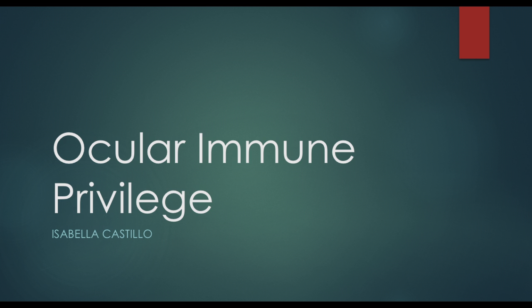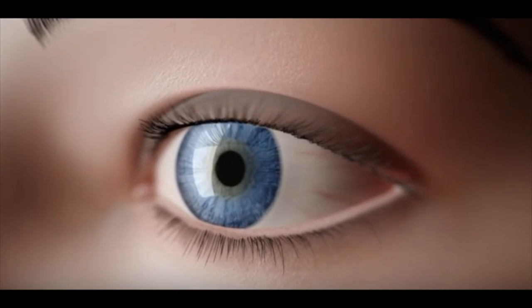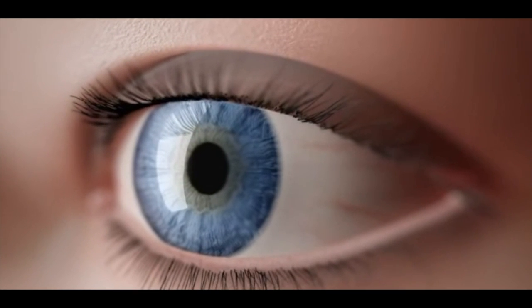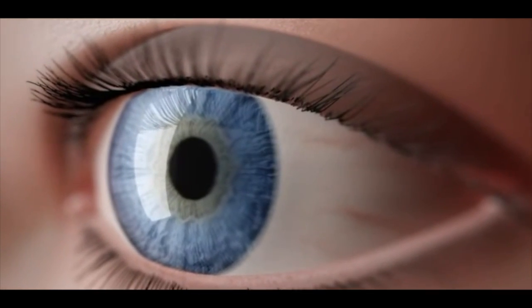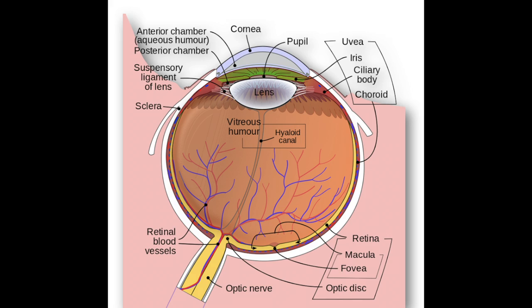What is ocular immune privilege? It's the attempt that our eye makes to limit local immune and inflammatory responses in order to preserve our vision. It's a homeostatic mechanism that preserves the normal function of our eyes, since they have such highly specialized tissue and a limited capacity for renewal in case of injury.